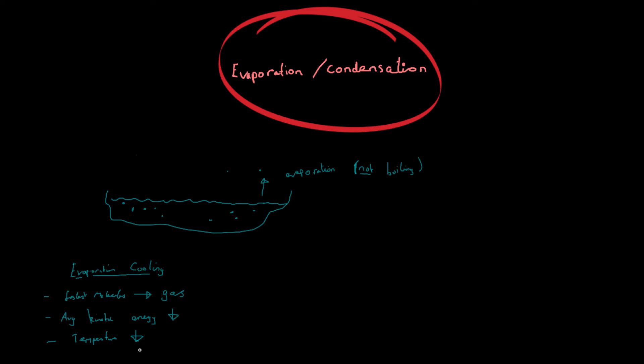So when we sweat, we secrete some water — sweat, which is water with salt in it. This water is on the surface of our skin, open to the environment, and it can evaporate. When this water evaporates, it removes some of the water from our body, the average kinetic energy goes down, and it takes away a lot of the heat. Heat is removed, and that is why sweating happens when we are hot or exercising — it ends up cooling us down.